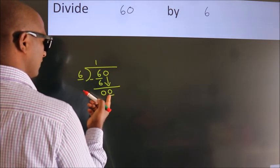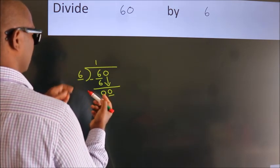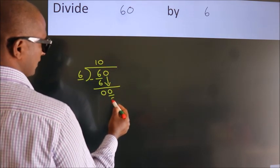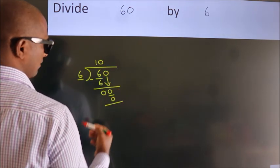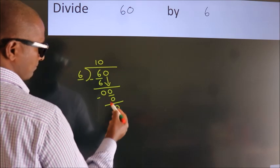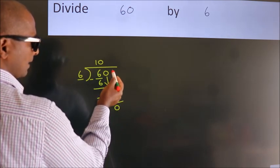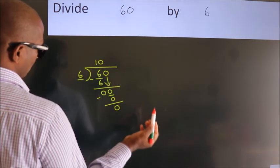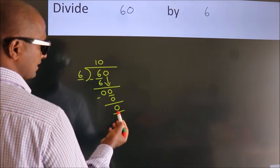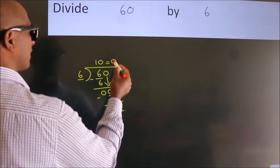When do we get 0? In the 6 table. 6 times 0 is 0. Now we subtract. We get 0. After this, no more numbers to bring down. We got remainder 0. So this is our quotient.